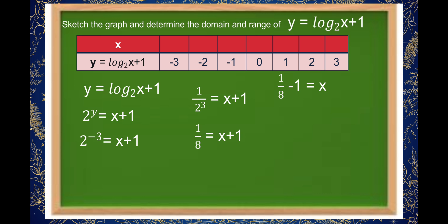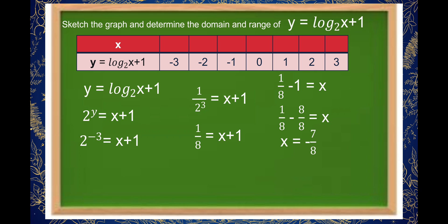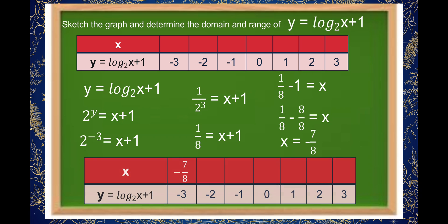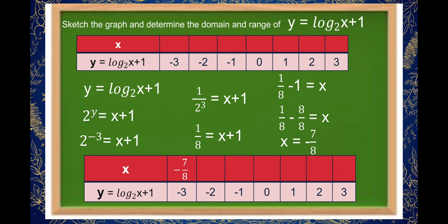Subtracting 1 from both sides, we have 1/8 minus 1 equals x. Changing negative 1 to negative 8/8, we get 1/8 minus 8/8, so x is equal to negative 7/8. Therefore, if y equals negative 3 in log of x plus 1 to the base of 2, then x is equal to negative 7/8.